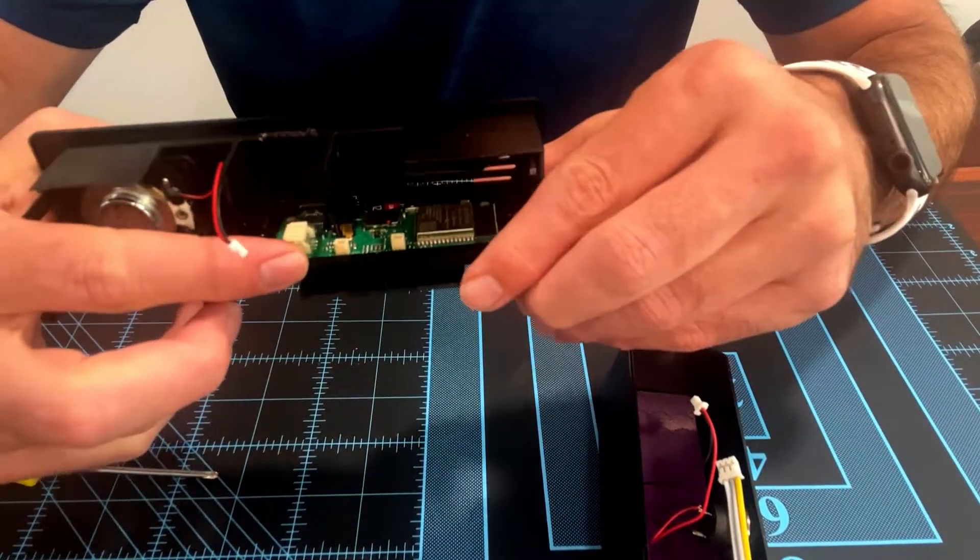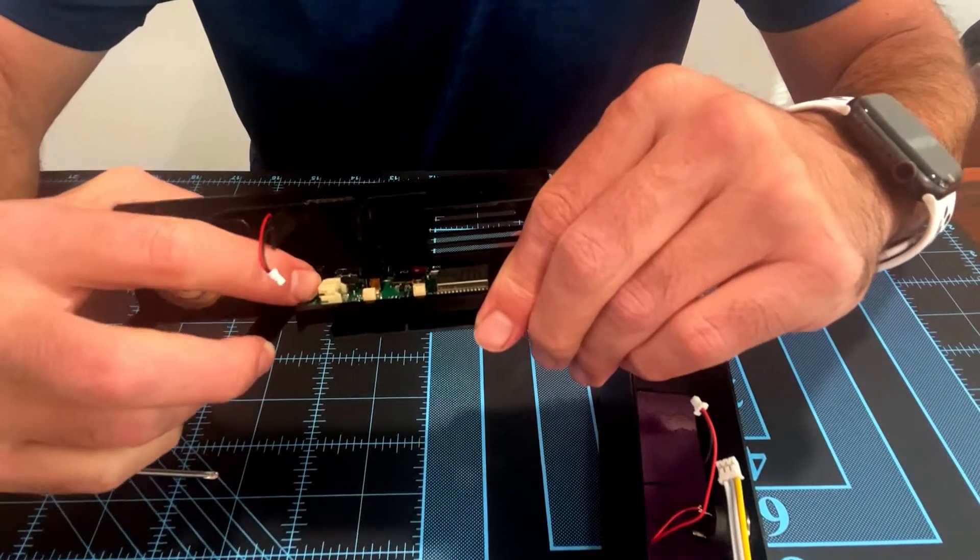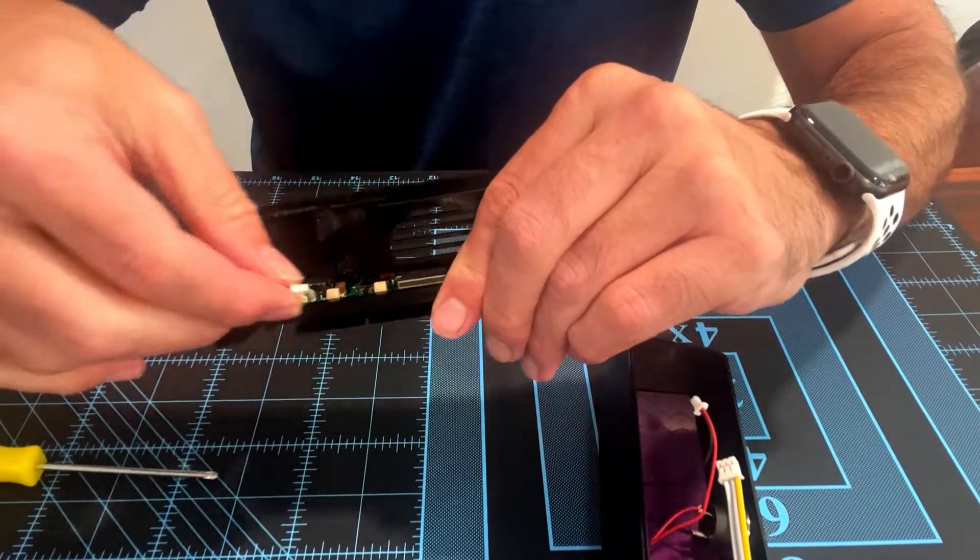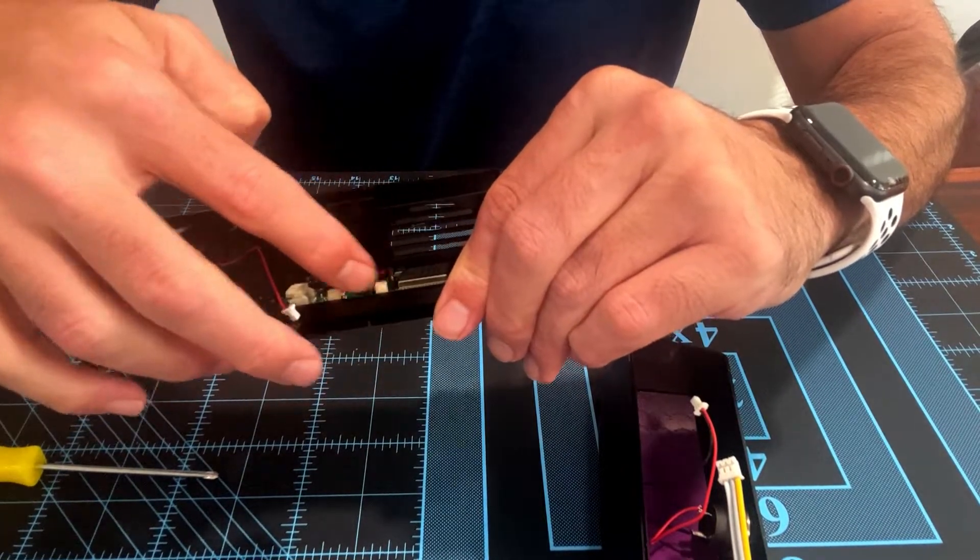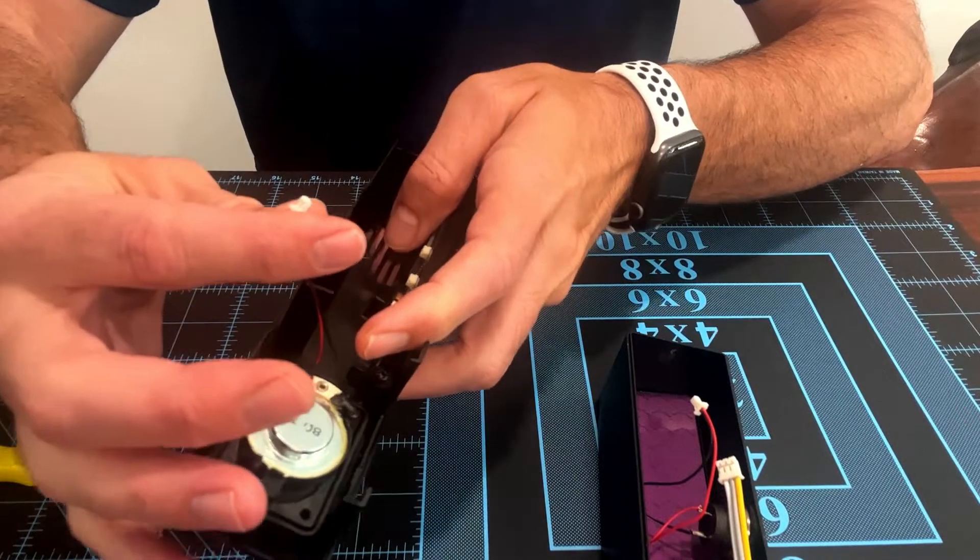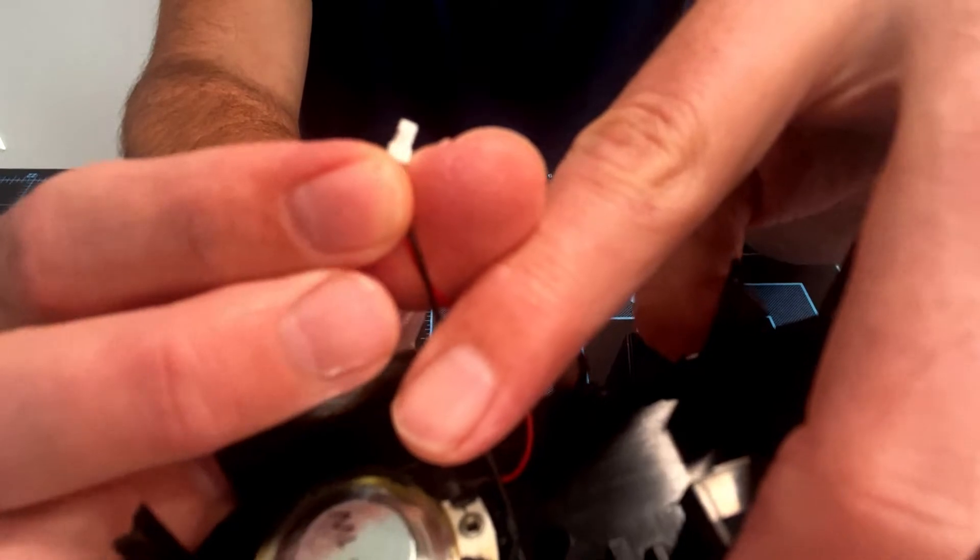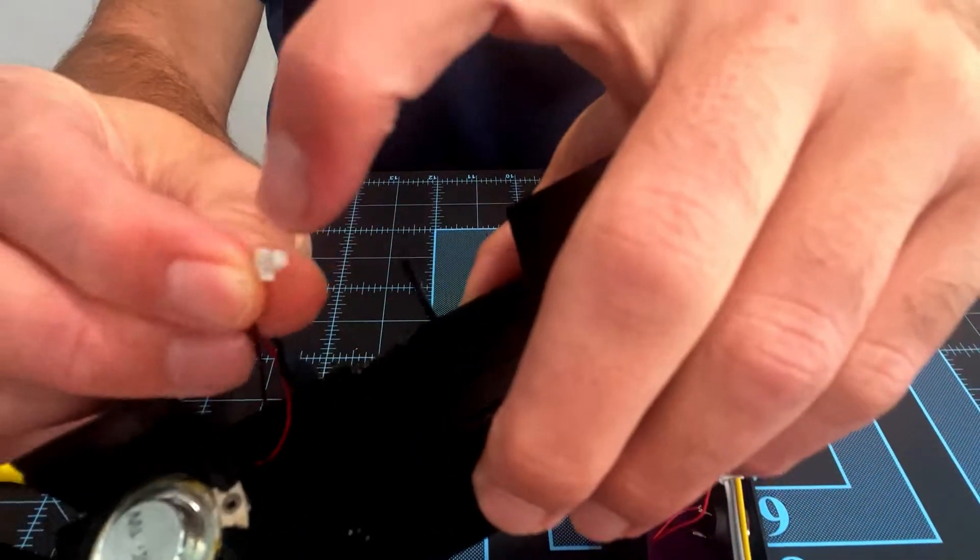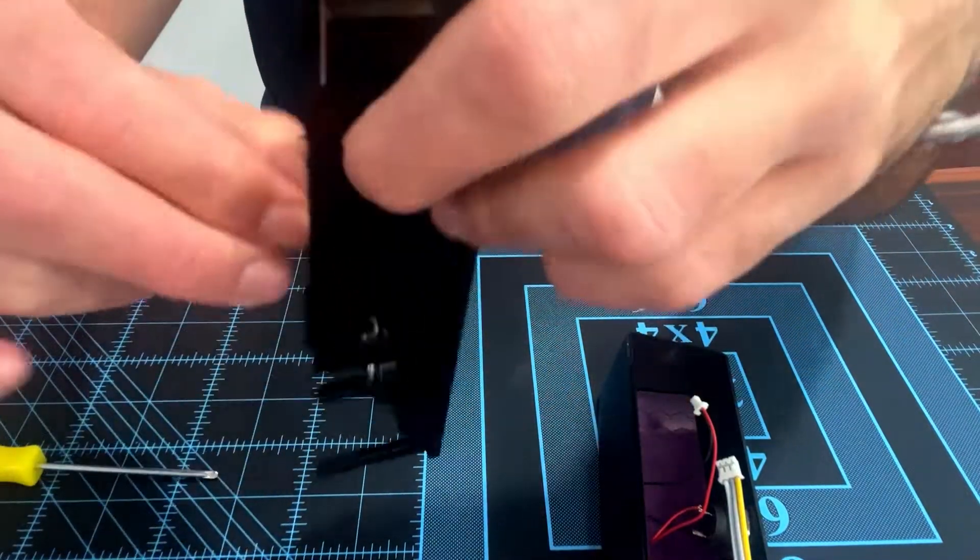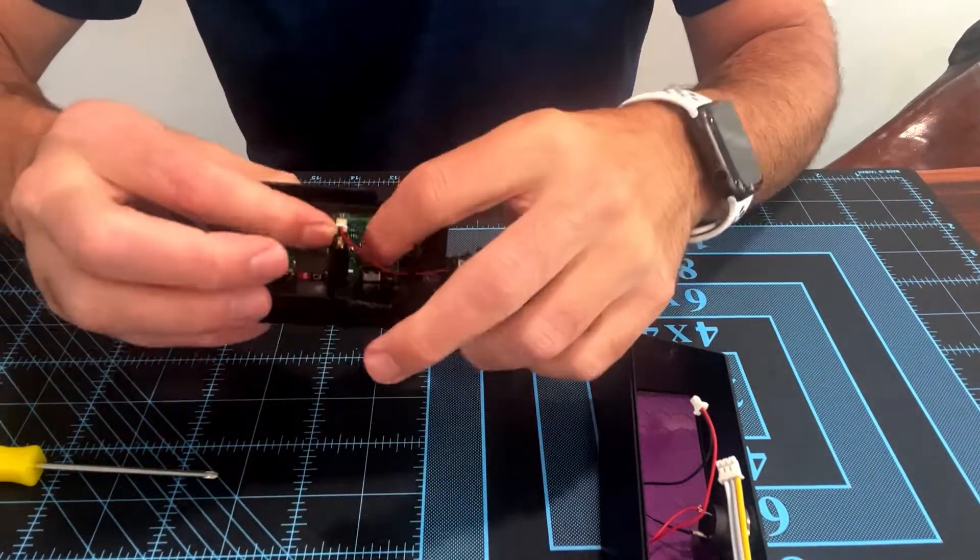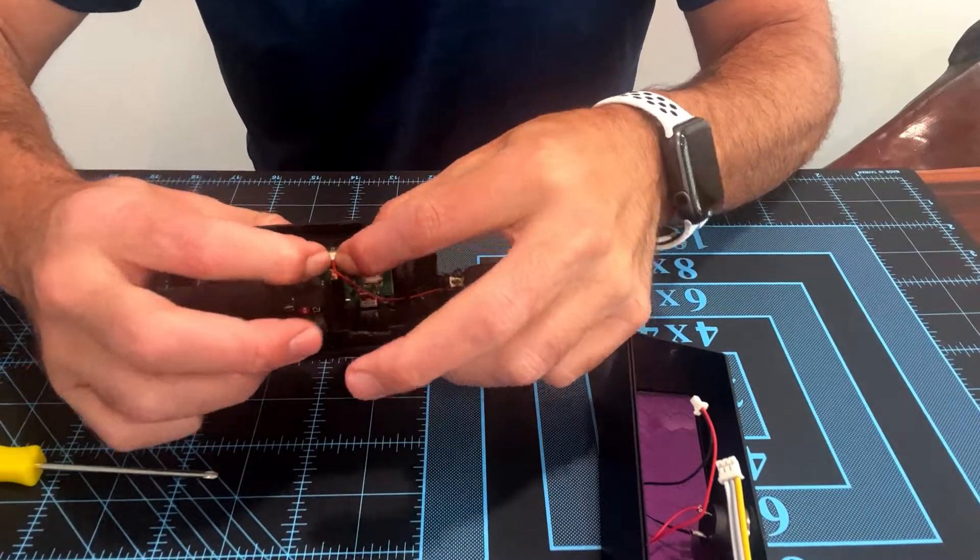Now looking at the connections again, you have the LED at the end. The first connection is for the speaker, the second connection is for the button. So I will plug in the speaker, and I'm going to show you—one side has a little nub sticking out that is not flush, that goes towards the front. Just insert it and then use your fingers to push it down.